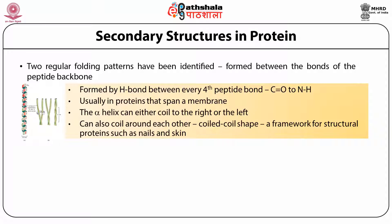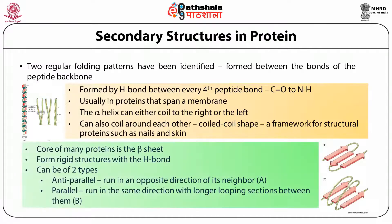The other secondary structure is the beta sheet, generally found in the core of many proteins. It forms a rigid structure through hydrogen bonding and can be of two types: anti-parallel, which runs in the opposite direction to its neighbor, and parallel, which runs in the same direction.